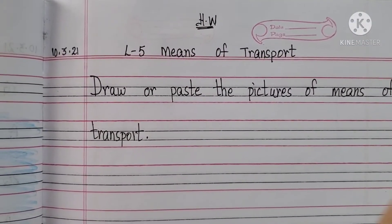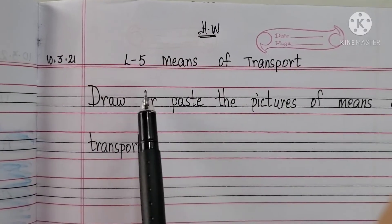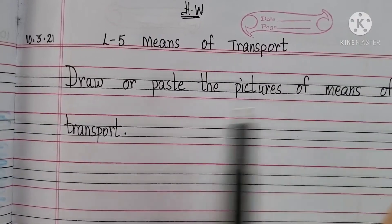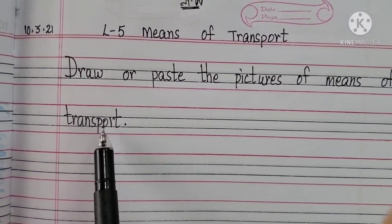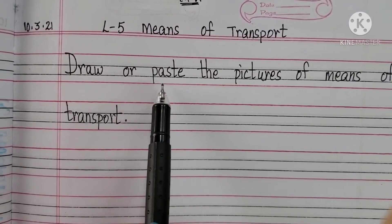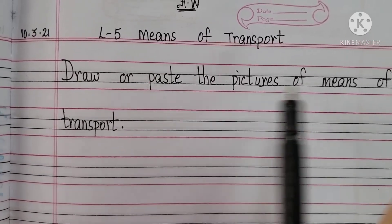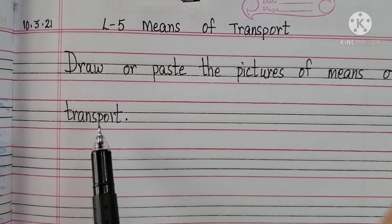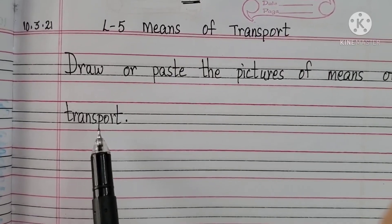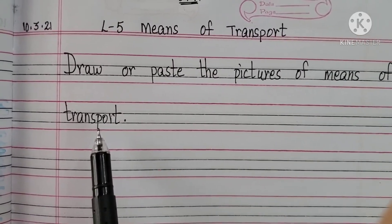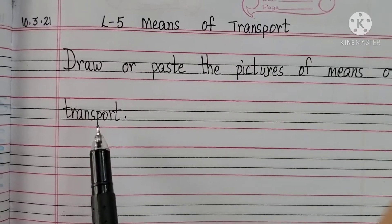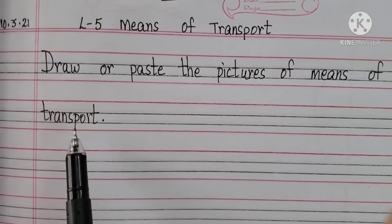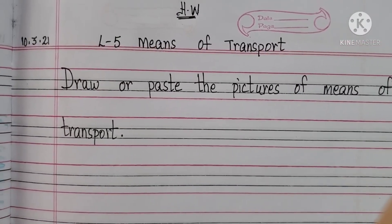Children, your homework for today is to draw or paste pictures of means of transport. You can draw or paste means of transport like cars, buses, aeroplane, helicopter, bikes, and cycle. Send them in your respective class groups.